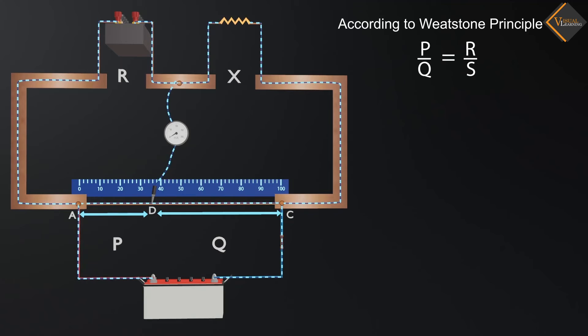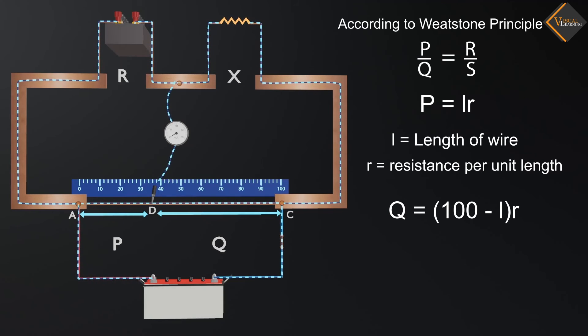Now, as we can see in the animation, the resistance P is equal to L into r, where L is length of the wire and r is the resistance per unit length. On the other hand, Q is 100 minus L into r. We can calculate the values of both resistances along with the length.